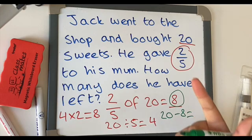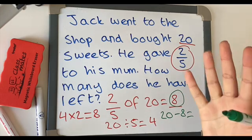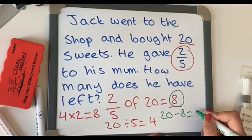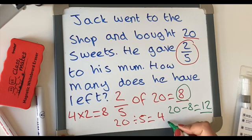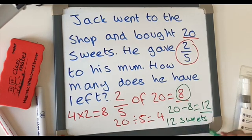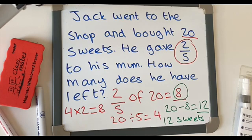20, 19, 18, 17, 16, 15, 14, 13, 12. So altogether, Jack has 12 sweets left. So the answer is 12.